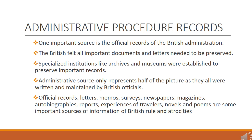Historians use different sources in writing about the last 250 years of Indian history. One important source is the official records of the British administration. The British believed that the act of writing was important — every instruction, plan and policy had to be clearly written up. The British also felt that all important documents and letters needed to be carefully preserved, so they set up record rooms attached to all administrative institutions. Specialized institutions like archives and museums were also set up to preserve important documents.